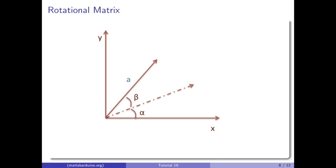Now consider that the same vector is rotated by an additional angle of beta units. The new x-coordinate is a times the cosine of alpha plus beta, and the new y-coordinate is a times the sine of alpha plus beta.